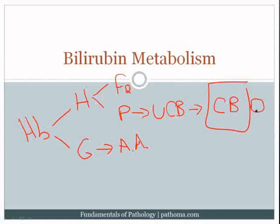The bilirubin is transported into the bile canaliculi, and from there it will go into the bile ducts and eventually be stored in the gallbladder for eventual use during digestion. At the appropriate time, bile will then be released into the small bowel to aid in digestion.